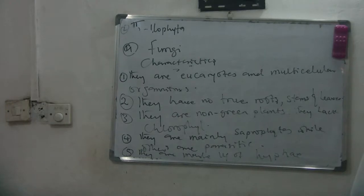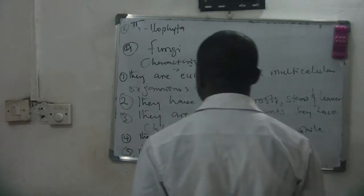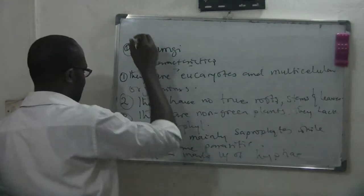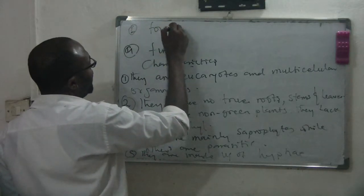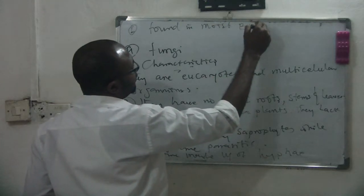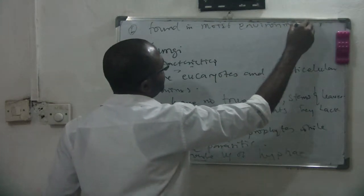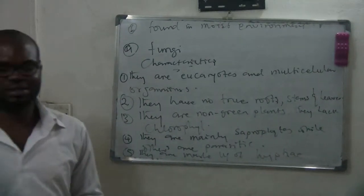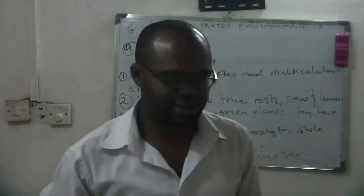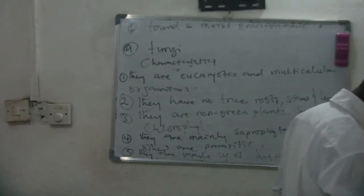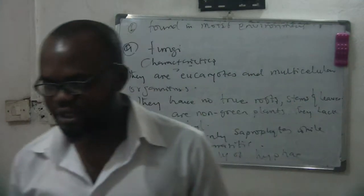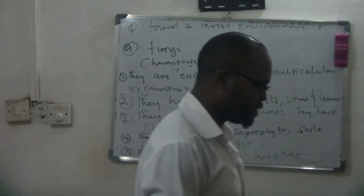Another characteristic: fungi are mainly found in moist environments. Moist means a place that contains water — maybe swampy or wet areas. You also find fungi on wet or moist food items like bread.